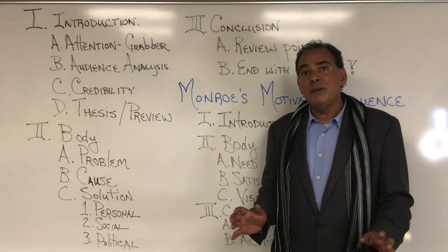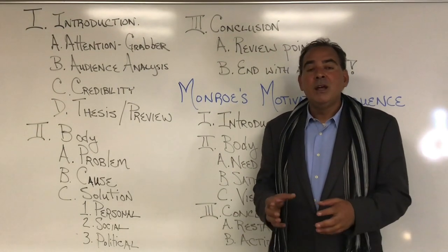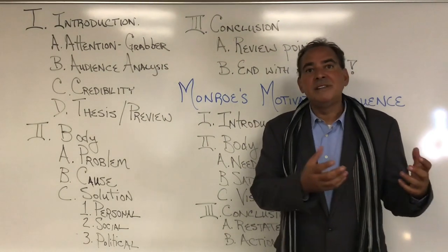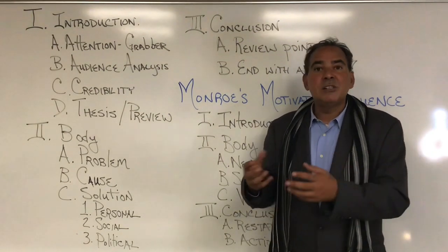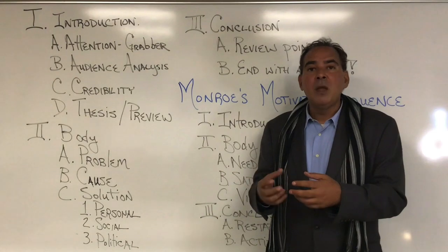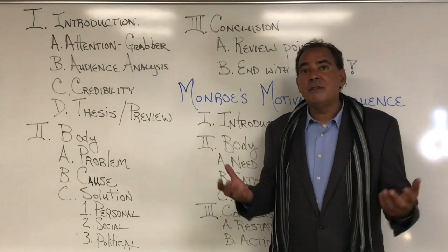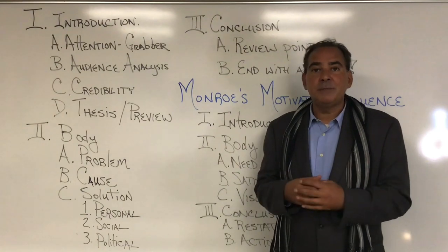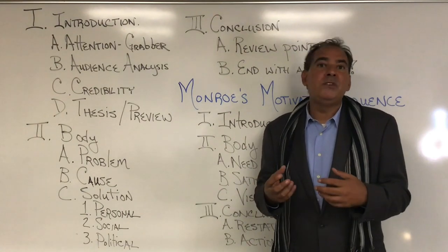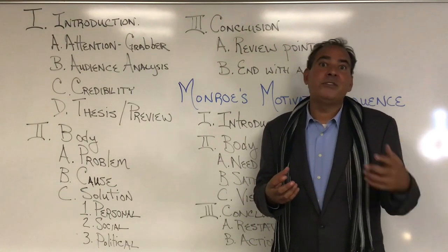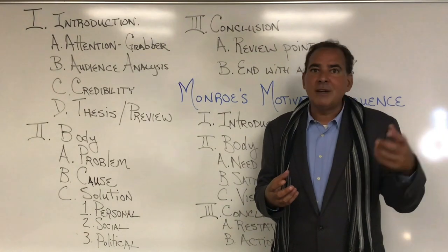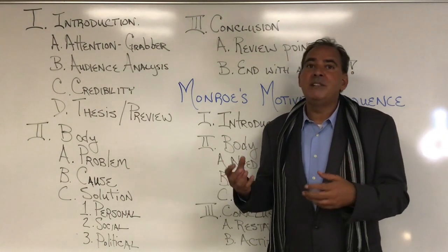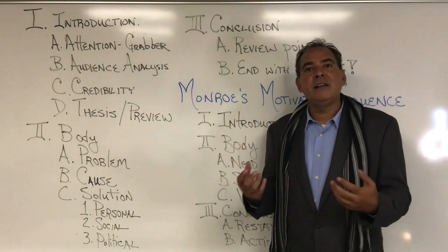For your informative speech, you had a lot of freedom and a lot of different choices about how to organize it. You might have organized it chronologically or spatially, or depending upon your topic, you might have chosen different organizational schemes. For example, if you wanted to do a speech about painting, you could do the history of painting — the past, the present, and the future — or you could do a speech about how to paint: the materials, the procedure, and the cleanup.